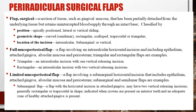Based on location of incision, flaps can be intrasulcular, sub-marginal, or vertical. In endodontics we use a combination of vertical and intrasulcular incisions to create a trapezoidal flap. The full muco-periosteal flap involves the intrasulcular incision and includes the epithelium, attached gingiva, alveolar mucosa, and periosteum — examples are the triangular and rectangular flap. The limited muco-periosteal flap involves a sub-marginal horizontal incision — going one to two mm above the sulcular area — and examples are the sub-marginal and semilunar flap.